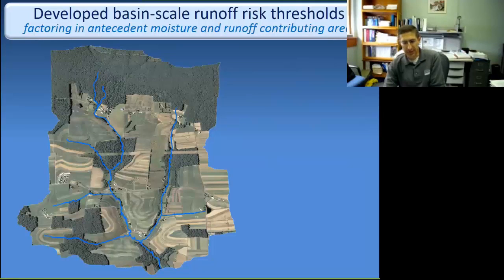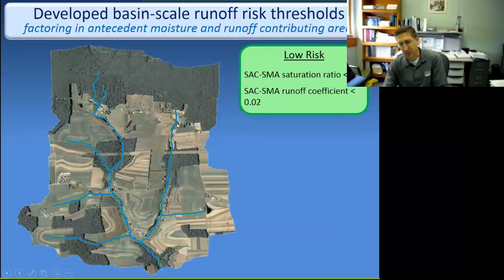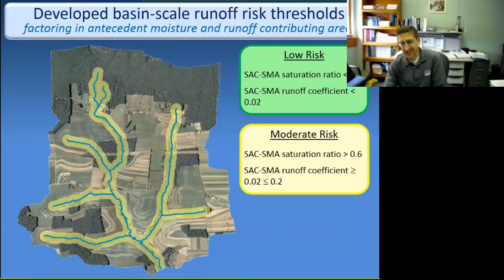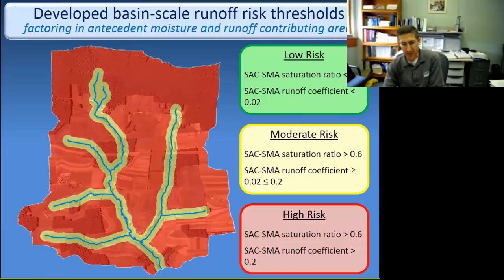These are threshold rules governing how we look at runoff risk at the two-by-two kilometer grid cell scale. When the saturation ratio is less than 0.6 and the runoff coefficient is less than 0.02 — that's the green area near the streams, about 2 percent of the watershed — we call that low risk. Moderate risk is when the saturation ratio exceeds 0.6 and the runoff coefficient lies between 0.02 and 0.2, meaning upwards of 20 percent of the watershed could be generating runoff. High risk is when the saturation ratio is above 0.6 and sufficient rainfall causes runoff coefficients to go well above 0.2, with larger fractions of the watershed generating runoff.